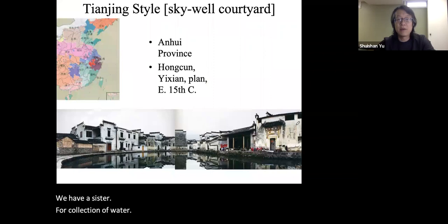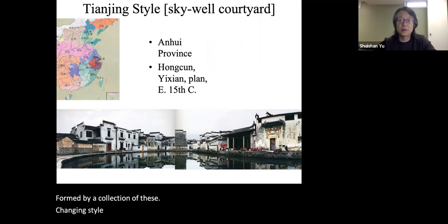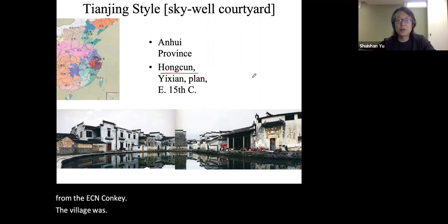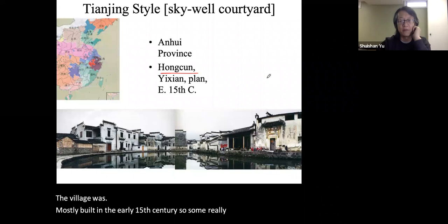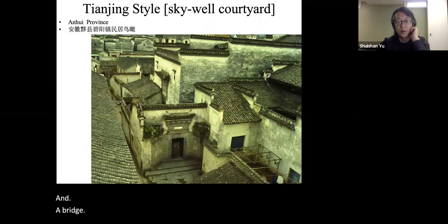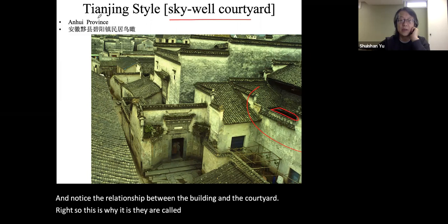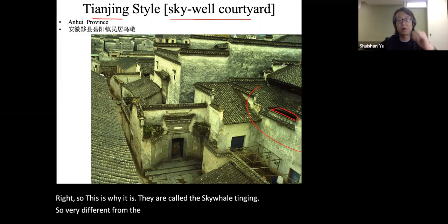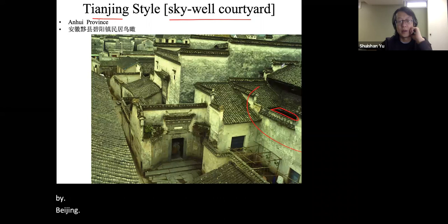Some very beautiful villages are formed by a collection of these Tianjin-style courtyards. This is Hongcun in Yixian county, Anhui province, mostly built in the early 15th century, so some really old houses can be found here — solid walls and a bridge. Notice the relationship between the building and the courtyard; this is why they are called the Skywell, or Tianjin. Very different from the horizontal northern courtyard as represented by Beijing and the Forbidden City.